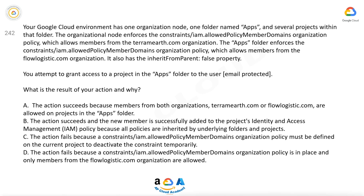You attempt to grant access to a project in the Apps folder to a user. What is the result of your action and why? A. The action succeeds because members from both organizations, teramearth.com or flowlogistic.com, are allowed on projects in the Apps folder. B. The action succeeds and the new member is successfully added to the project's IAM policy because all policies are inherited by underlying folders and projects. C. The action fails because a constraints/iam.allowed-policy-member-domains organization policy must be defined on the current project to deactivate the constraint temporarily. D. The action fails because a constraints/iam.allowed-policy-member-domains organization policy is in place and only members from the flowlogistic.com organization are allowed.